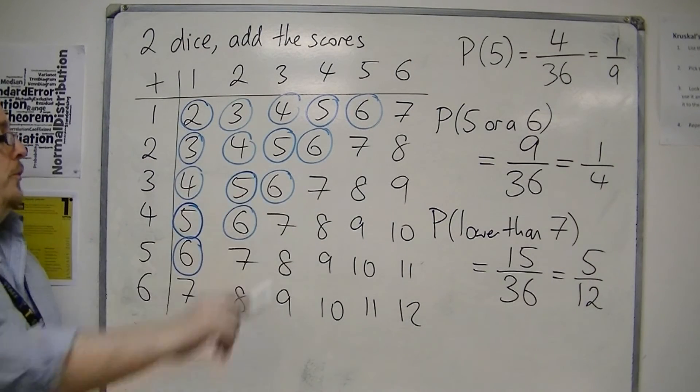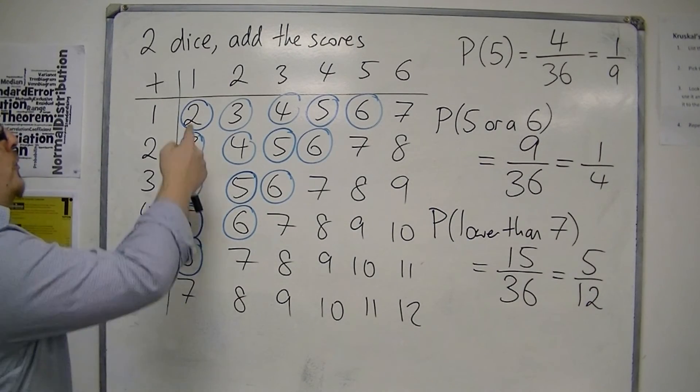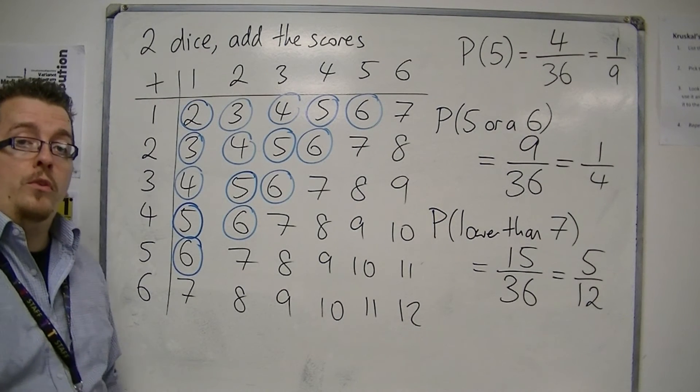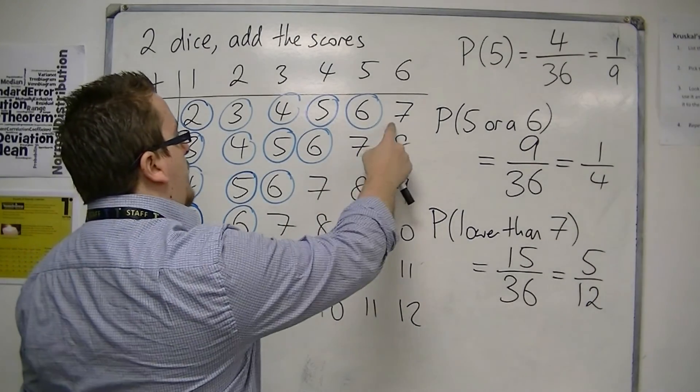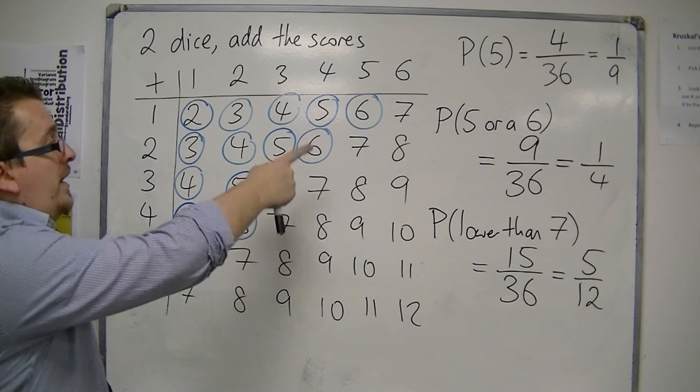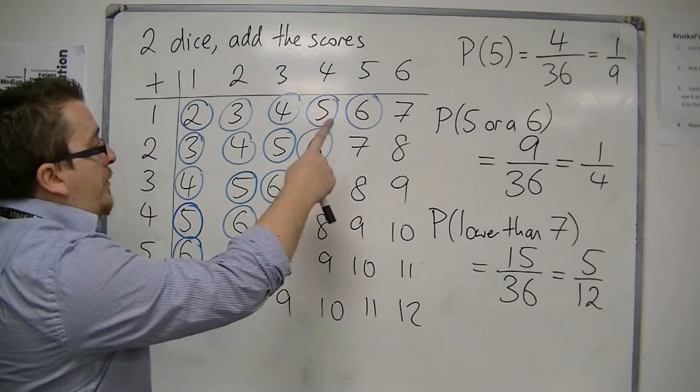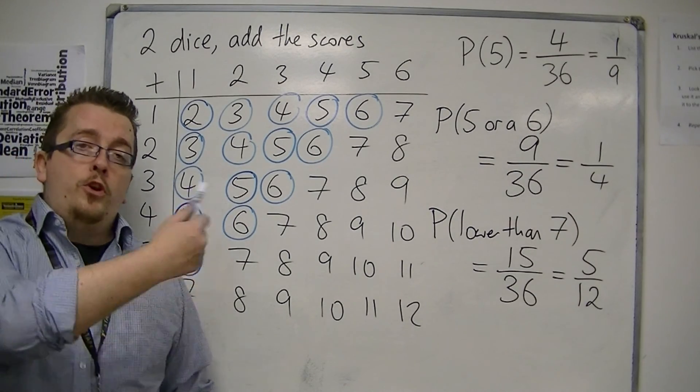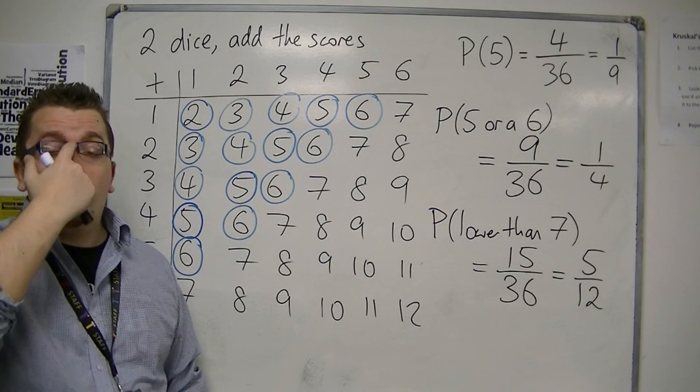Now from the sample space, you can also gain other bits of information. There's only one way of scoring a two or a twelve, for example. And the most likely score that you would get from rolling two dice is actually seven, because that comes up more times than any other number. So there's six ways of getting a seven, and the next best is an eight or a six. A lot could be told from a sample space, and you could be asked to fill out a sample space and then answer questions there.